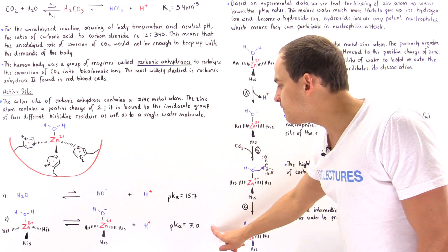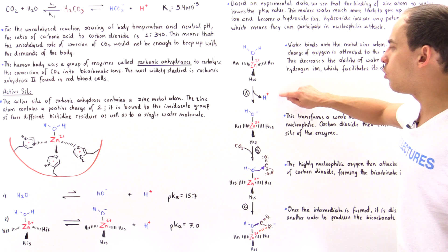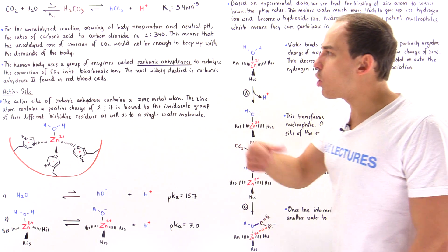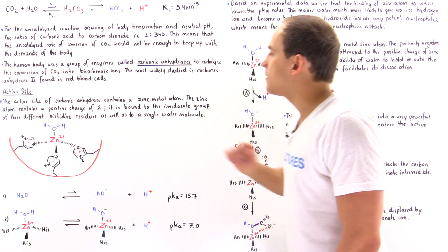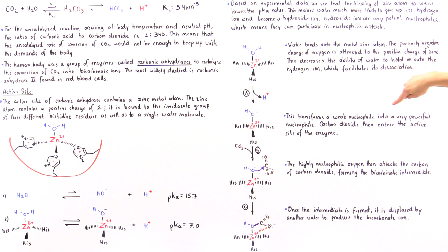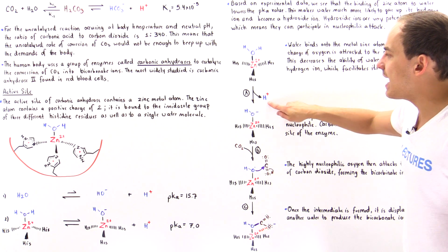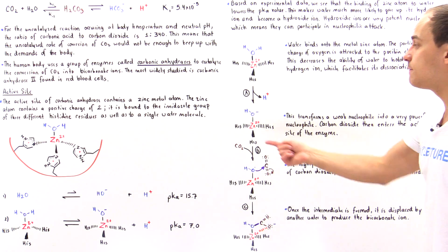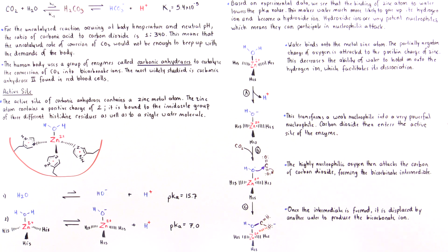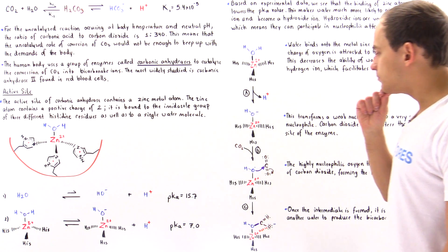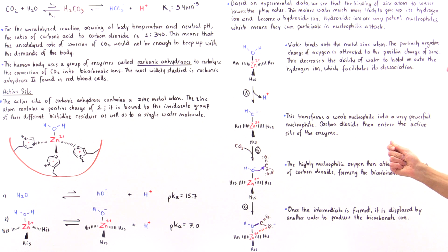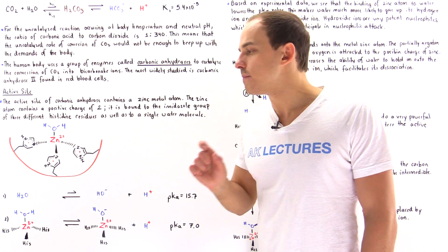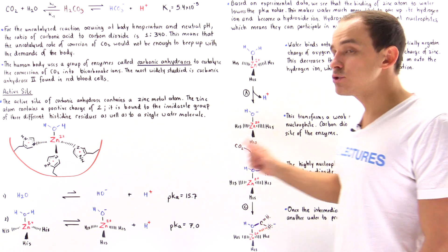Because the pKa value is lowered from 15.7 to 7.0, this dissociation is very likely to take place. This transforms a weak nucleophile into a very powerful nucleophile. As the H+ ion leaves the oxygen, we transform the water molecule — a poor nucleophile — into a strong nucleophile, that hydroxide. Now the carbon dioxide basically enters the active site. As the carbon dioxide enters, the oxygen of that hydroxide attached to the zinc acts as a nucleophile and attacks the carbon of that carbon dioxide, displacing one of the pi bonds between carbon and oxygen.